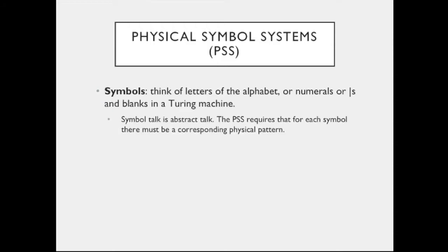When they talk about symbols, they mean discrete physical entities, like letters of the alphabet, or numerals, or marks on the table of the Turing machine. They can also be the sounds that you utter. Symbol talk is abstract talk, so the physical symbol system hypothesis requires that for each symbol, there must be a corresponding physical pattern that realizes it. We're used to thinking of computers as dealing with ones and zeros, but ultimately those ones and zeros must be translated into physical phenomena, such as corresponding voltage values.